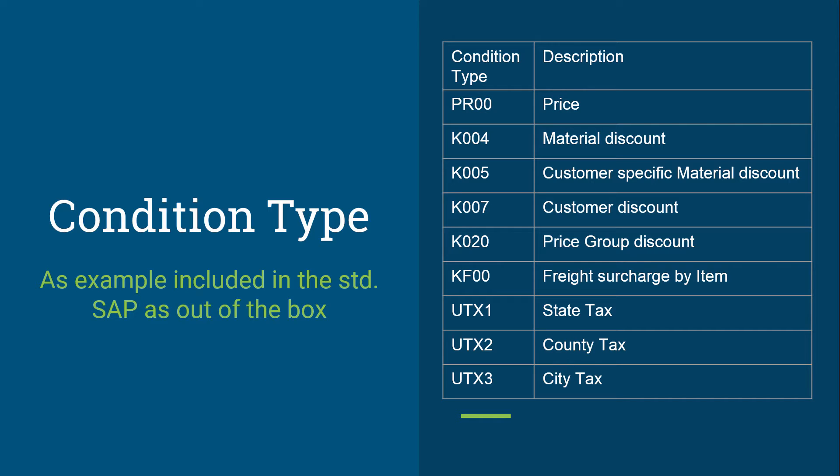For example, a 2% discount for an order over 100 units. If you want to use both possibilities, then you must define two separate condition types. Here are some examples of standard condition types that you will see in SAP system already provided. And if you need your own condition type, then you have the flexibility to create your own.